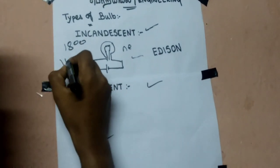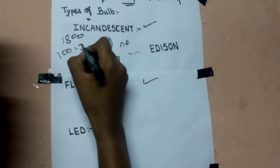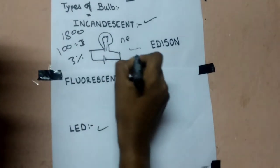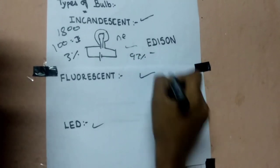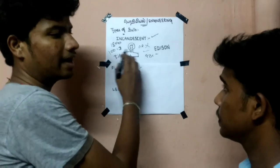If we add current, only 3% of the current produces light. The other 90% of the current is wasted as heat. This is an incandescent bulb.